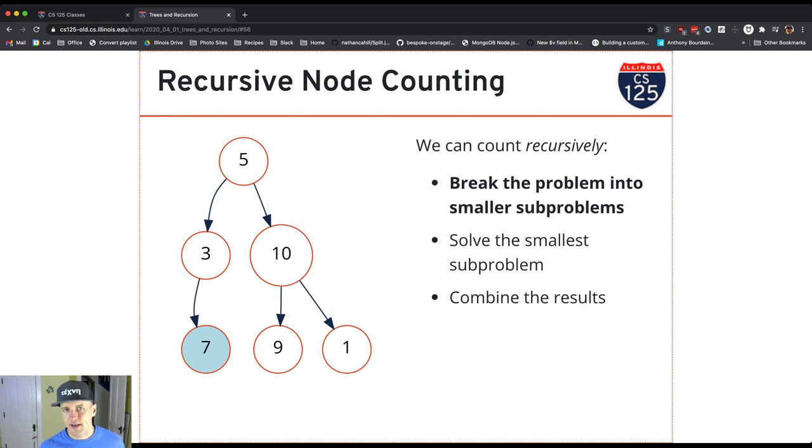So now I'm counting this left subtree and here's where it starts to get nice. Okay, I've arrived at a leaf node. This node has no children. How many nodes are in a tree with just one node? Well, that's a pretty easy problem to solve.